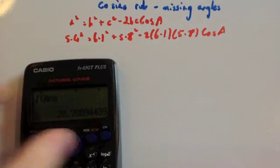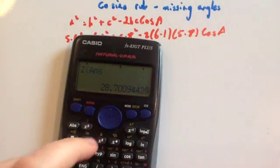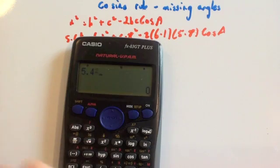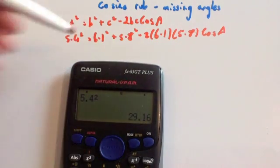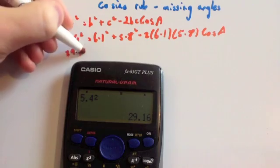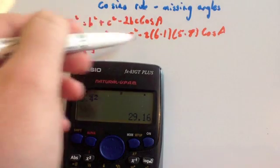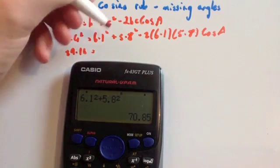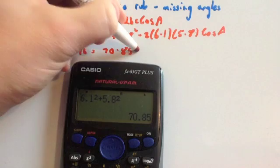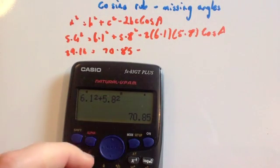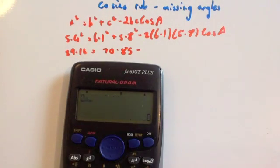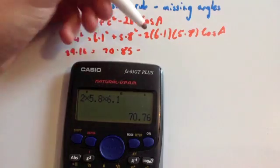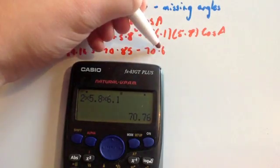5.4² = 29.16. 29.16 equals... I'm going to work out 6.1² + 5.8², so 6.1² + 5.8² = 70.85. 70.85 - 2 × 5.8 × 6.1. 2 × 5.8 × 6.1 is 70.76, times that by the cos of angle A.